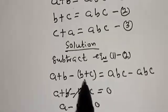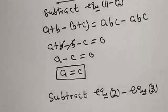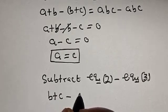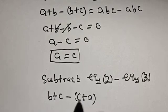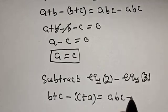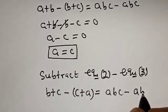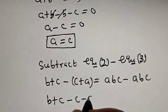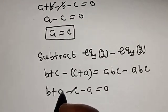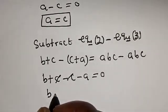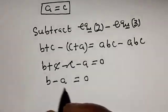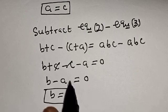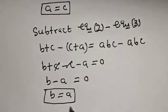Now let's subtract equation two from equation three. (b plus c) minus (c plus a) equals abc minus abc. This gives b plus c minus c minus a equals zero. The c terms cancel, leaving b minus a equals zero, so b is equal to a. We now have b equal to a and a equal to c.